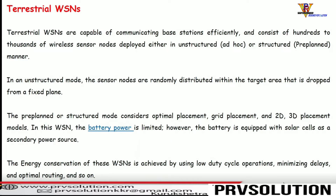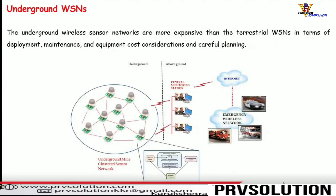In terrestrial wireless sensor networks, battery power is limited; however, the battery is equipped with solar cells as a secondary power source, allowing long operation. Energy conservation is achieved by using low duty cycle operation, minimizing delays, and optimal routing. These nodes are placed on the ground, which is why the network is termed a terrestrial wireless sensor network.